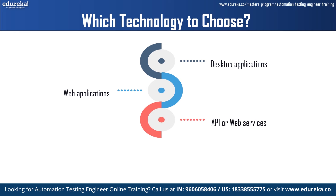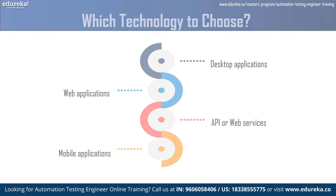API or web servers provide ready-made functionality that developers can plug into their code. Mobile applications can be downloaded from the app store for a single user account. When testing these technologies, you should focus on the right tools: AutoIt and WinAppDriver for desktop applications; Selenium and TestComplete for web application testing; Katalon Studio and Postman for API testing; and Katalon Studio for mobile testing.